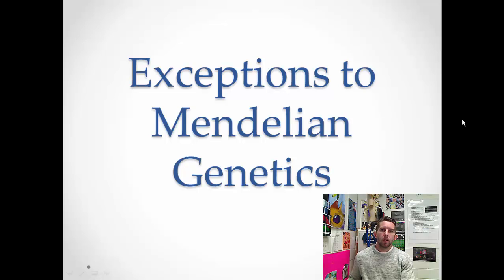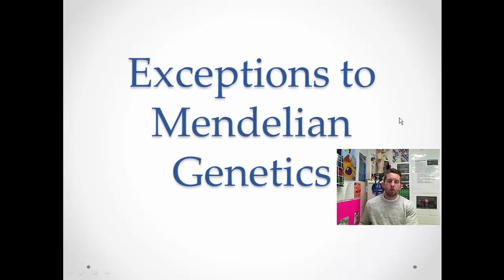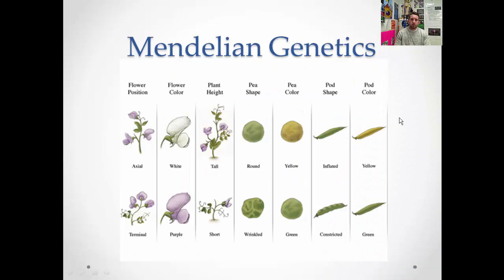We've worked our way through Mendelian genetics, and we saw what Mendel saw when he looked at the pea plants in his garden. The traits that he looked at — flower position, flower color, plant height, etc. — showed a dominant trait and a recessive one. Dominant traits masked the recessive one, and it was pretty clear-cut. But we know that genetics isn't that simple.